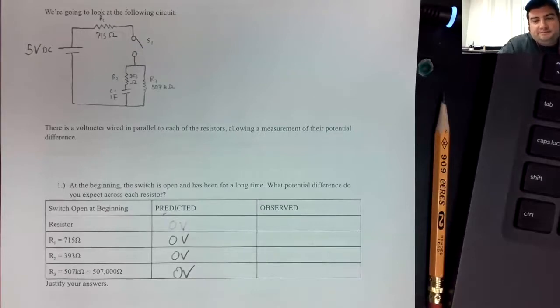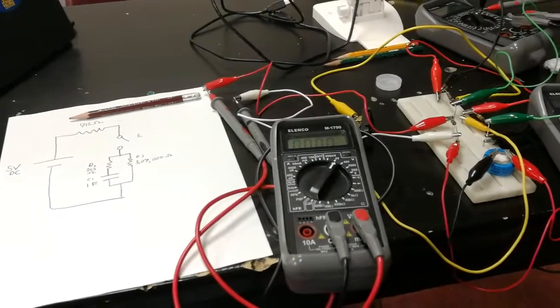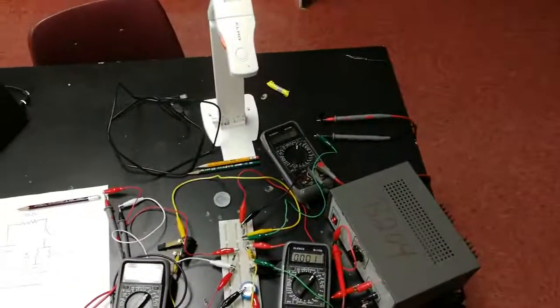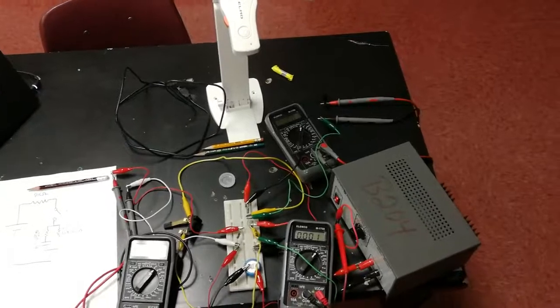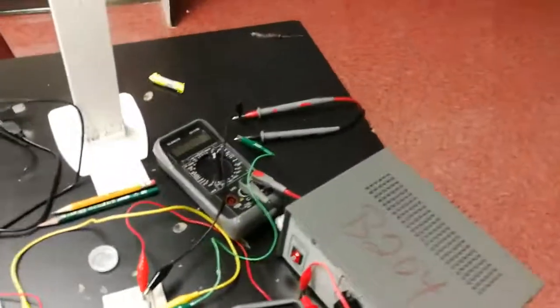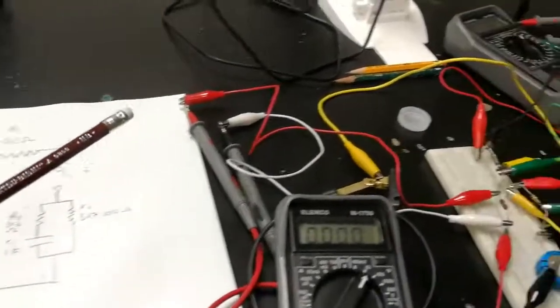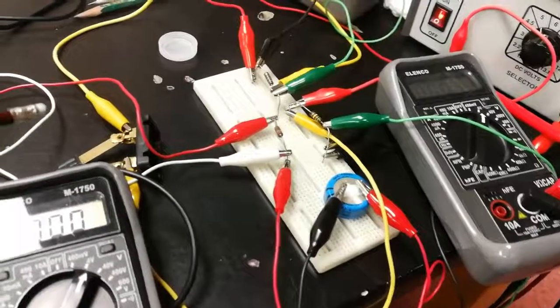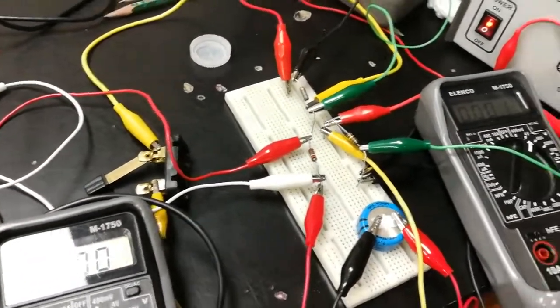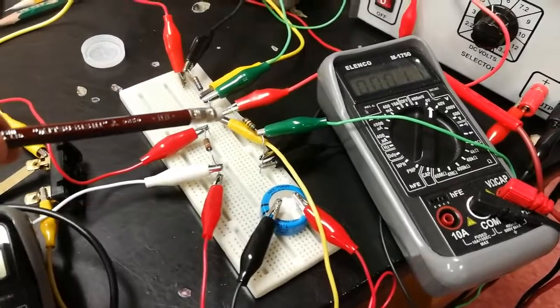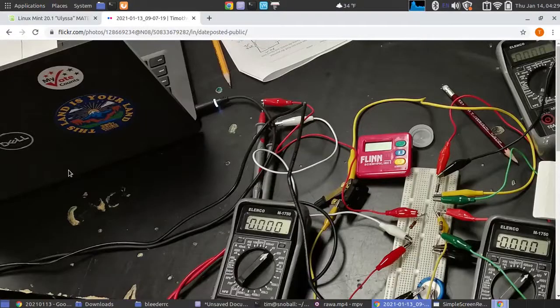Let's take a look at the circuit. When you see the circuit built using all our alligator clips, it actually looks pretty ugly. I wanted to get the document camera in here because you're mostly going to be seeing it from above. We have our 5-volt power supply here, connected to a 715-ohm resistor, then a switch, a 390-ohm resistor and a 1-farad capacitor. We've also got a really enormous resistor, 507 kilo-ohms. As you can see at the beginning with the switch open, we have no potential difference across any of the three resistors.